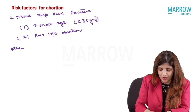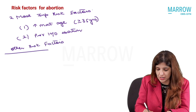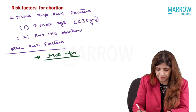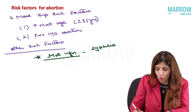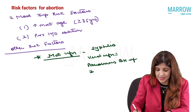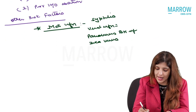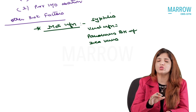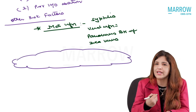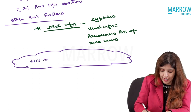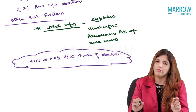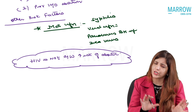Other risk factors include maternal infection. For example, infections like syphilis or viral infections like parvovirus B19 infection and Zika virus infection. If the mother has a history of infection in the present pregnancy, that becomes a risk factor for abortion. Is there any infection which does not lead to an increased risk of abortion? Yes — remember, HIV is not associated with an increased risk of abortion. So remember the two most important risk factors for abortion, and also remember infections are a risk factor, with HIV being the exception.